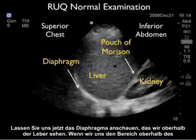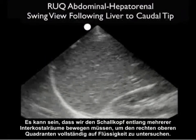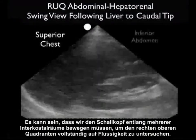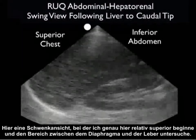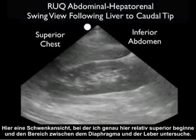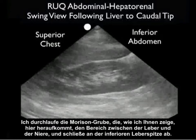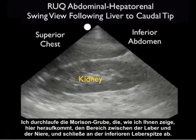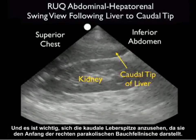Let's now look at the diaphragm, which we see above the liver. If we look above the diaphragm, this is where we would look for fluid within the chest cavity, or hemothorax, in the trauma patient. We may have to move the probe several intercostal spaces on the patient's side to fully investigate the right upper quadrant for fluid. Here's a swing view starting relatively superior, looking at the area between the diaphragm and the liver, going through Morrison's pouch, then showing the area between the liver and the kidney, and terminating at the inferior tip of the liver. Notice the caudal tip of the liver extending almost all the way down past the inferior pole of the kidney, representing the beginning of the right pericolic gutter.